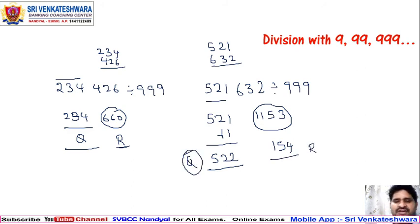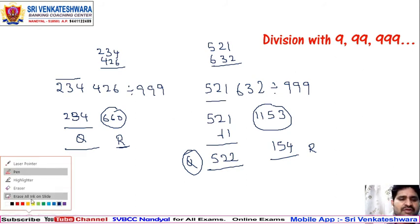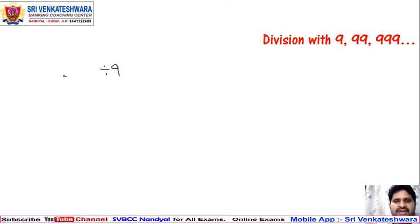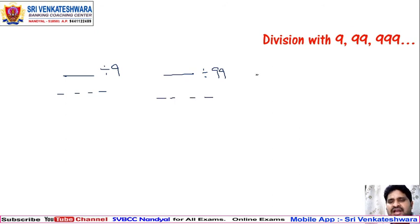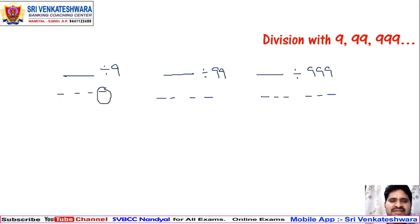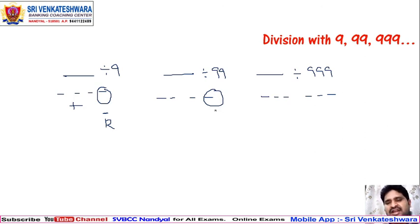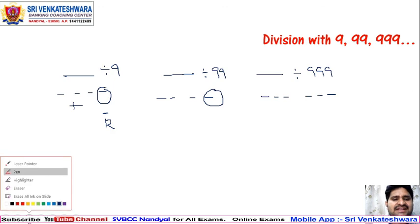To summarize: when dividing by 9, take one digit at a time; when dividing by 99, take two digits at a time; when dividing by 999, take three digits at a time. Add each group progressively to the next. If the final sum is below the divisor, it's directly the remainder. If it exceeds the divisor, divide again, carry the extra to the coefficient, and the leftover is the remainder. This same process applies consistently for 9, 99, and 999 divisions.